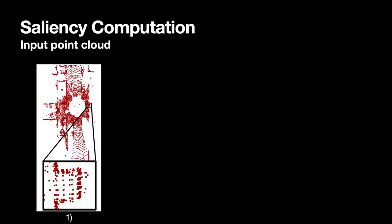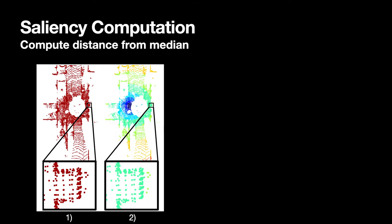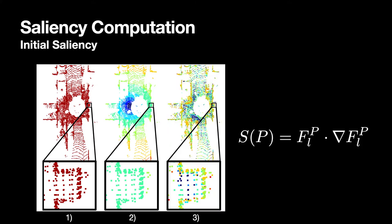Next, I will walk you through the process of extracting saliency information from point clouds. Let's see how the saliency computation actually works. First, we take an example point cloud such as this one from the KITTI dataset, and this is a top-down view where the black box shows a zoomed-in area of the wall. We then compute the distance from the median of the point cloud to each point. Here, points close to the center are colored in blue, further away points are colored in red.